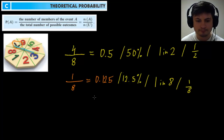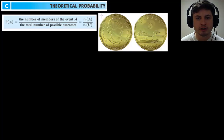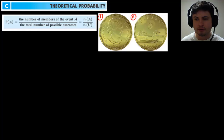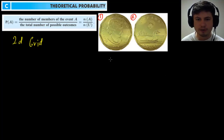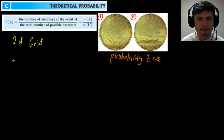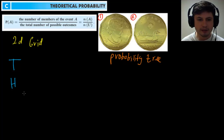Let's take a look at more examples — specifically the case where there are two things happening at the same time. We have two coins being flipped at the same time and we're looking for a certain type of probability. For coins it's easy, but for some other things you may want to use something called a two-dimensional grid — a 2D grid — or something called a probability tree. For the 2D grid, you have columns and rows. On the left side you write all the possibilities for the first coin: tails or heads. On the bottom you do the same for the second coin: tails and heads. Then you draw imaginary lines going between them.